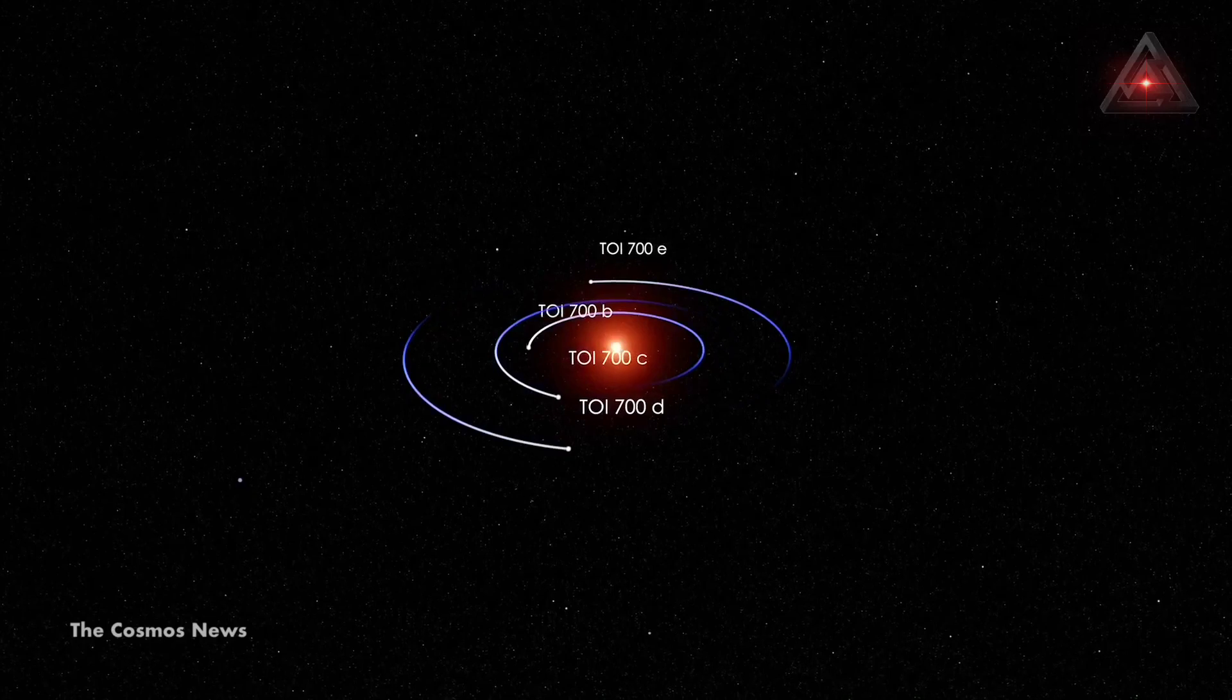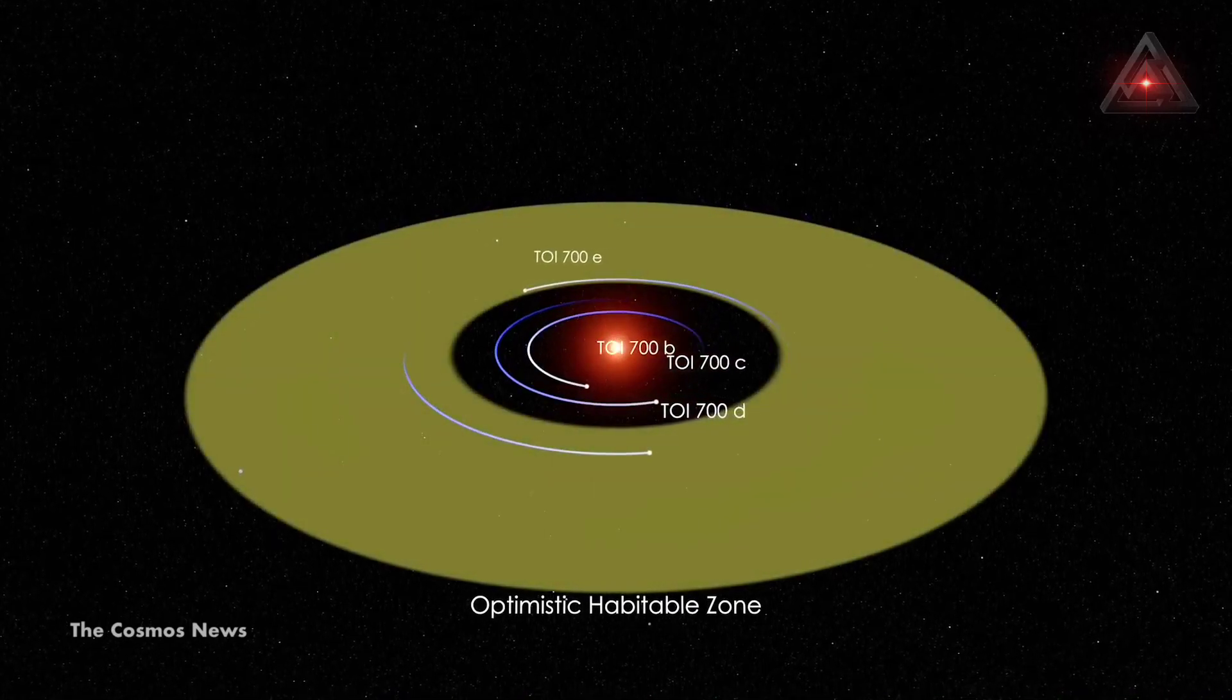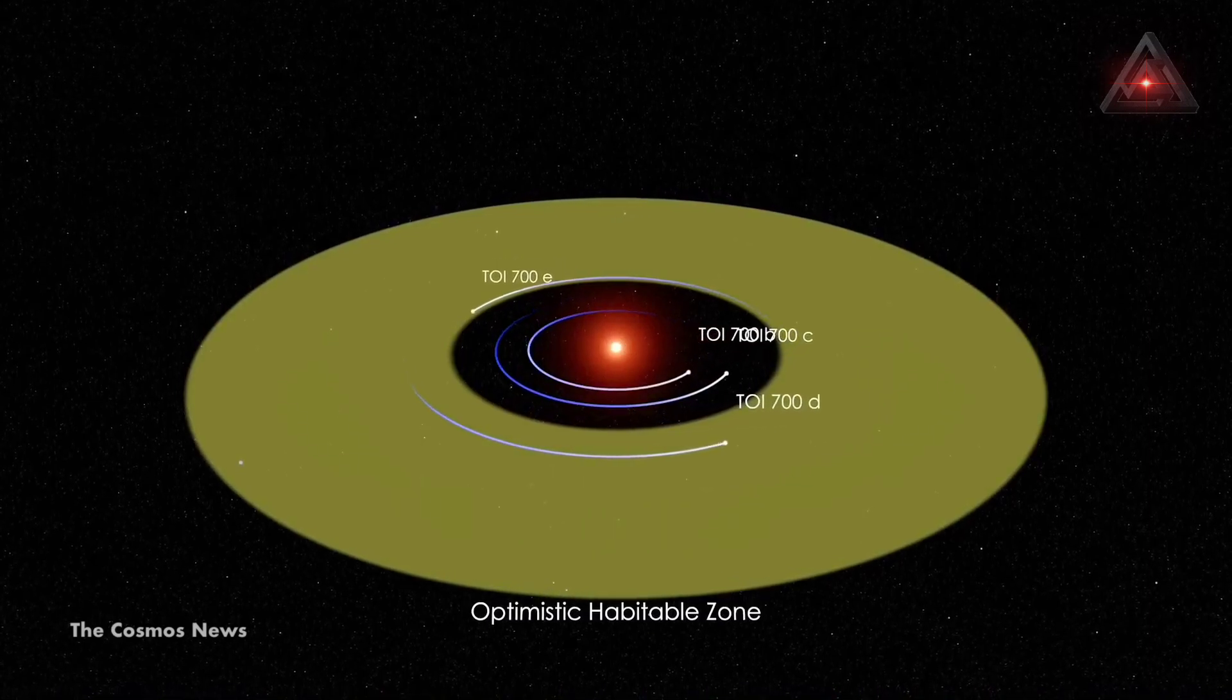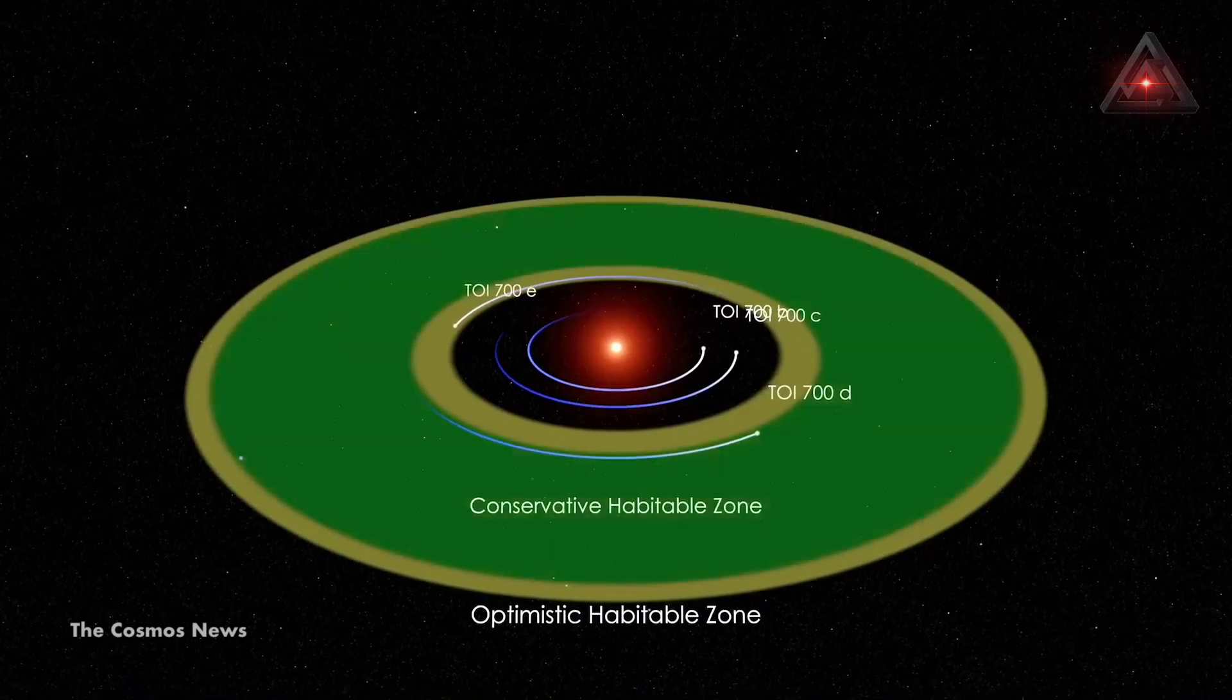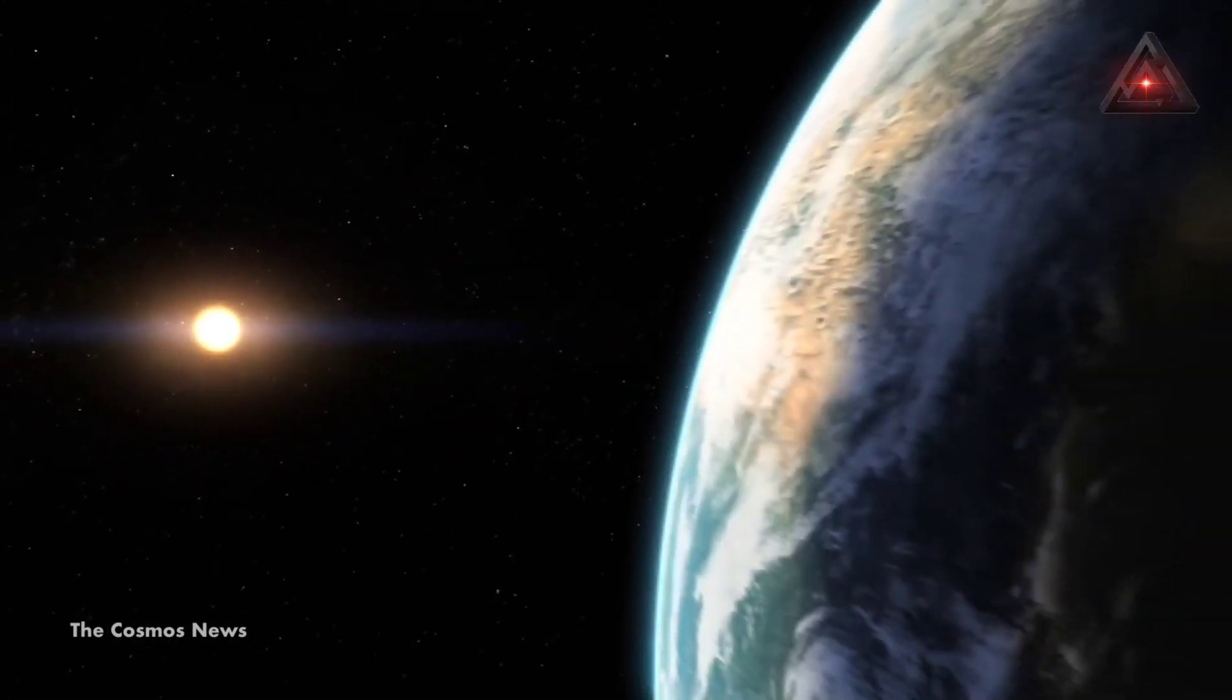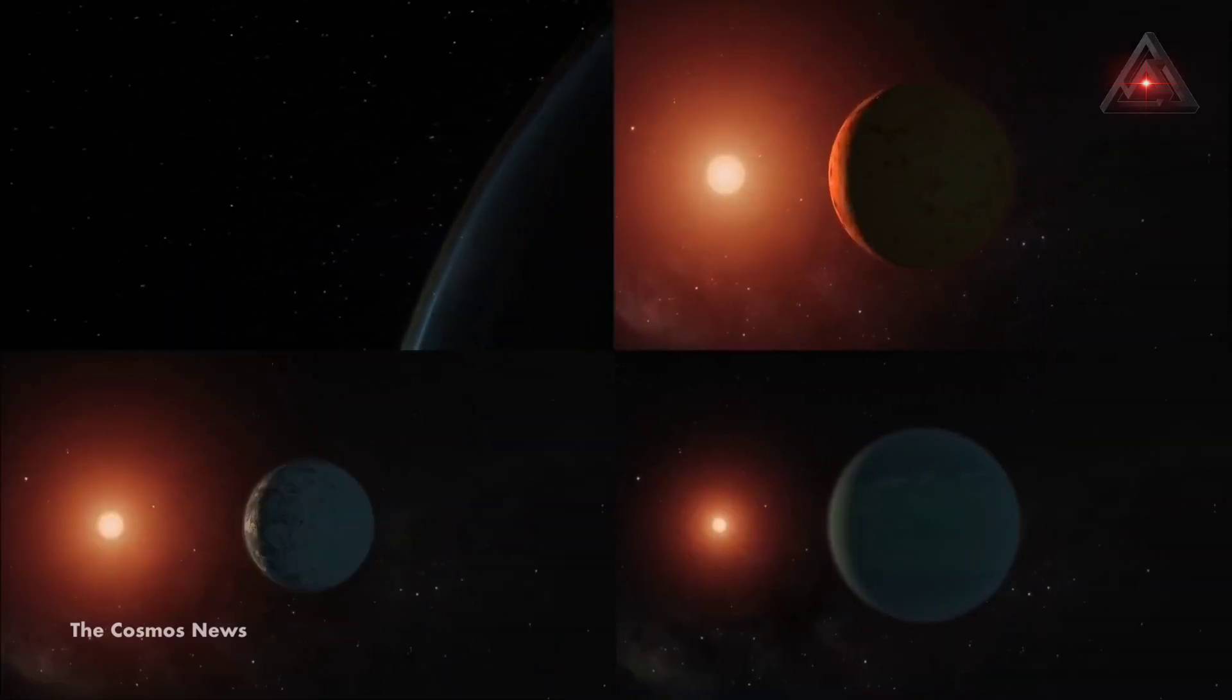Both of these exoplanets exist in their star's habitable zone, or just the right distance from the star that liquid water might potentially exist on their surfaces. The potential for liquid water suggests that the planets themselves could be, or might once have been, habitable for life. The discovery of the fourth planet was announced Tuesday.